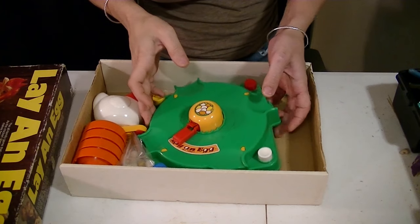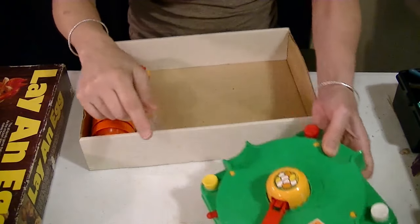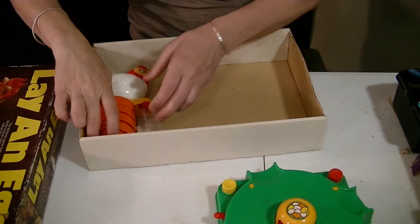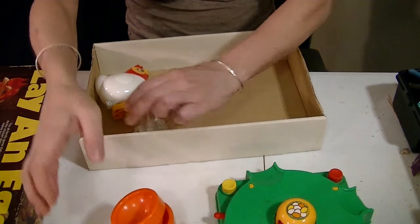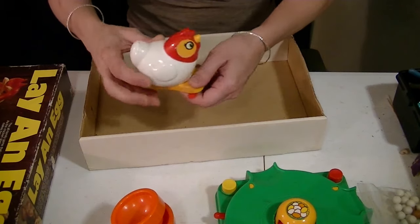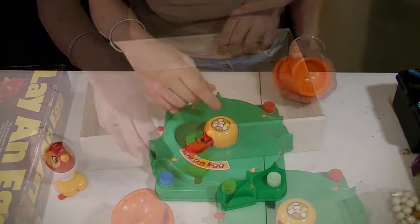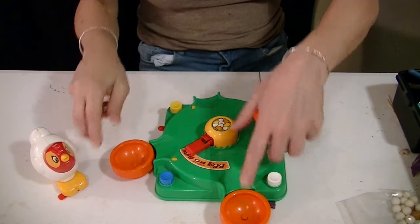What this game consists of is the little board that the chicken connects to and that you hit the buttons with. They each have a nest, four nests, the eggs, and the chicken. So the nests fit around like this.